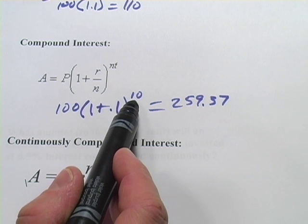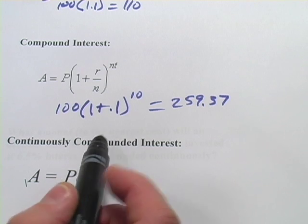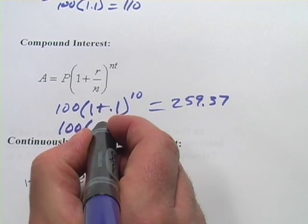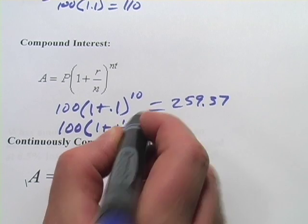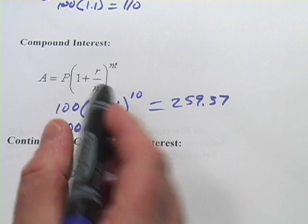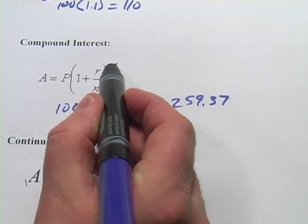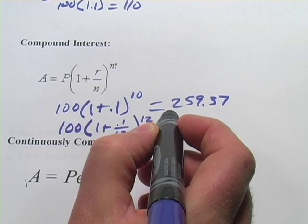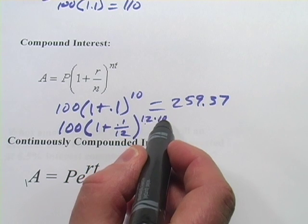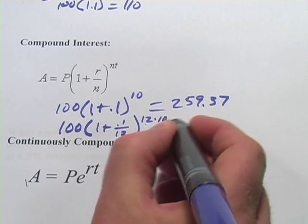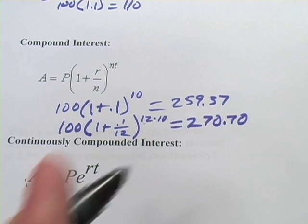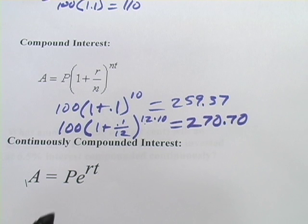Now, that's when you compound it every year. If you compound that monthly, you get a little bit more. So this would be 1 plus the rate, which is .1, divided by the number of times per time period that you compound. If it's monthly, it's going to be 12 times in a year, and then we get that 12 times 10. So 12 for the number of time periods that's monthly, over 10 years. And if you crunch the numbers on that, you actually get $270.70. So that's even better than compounding it once a year.